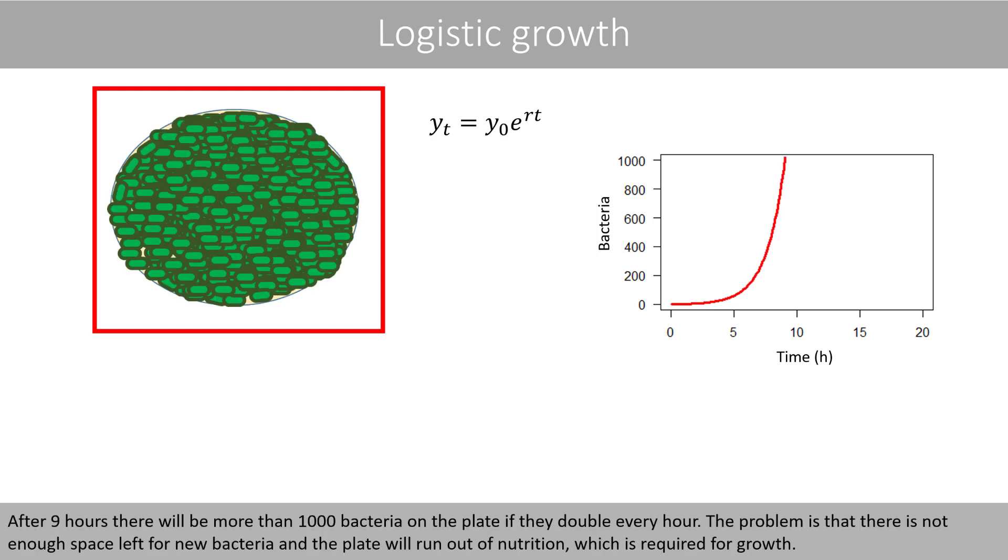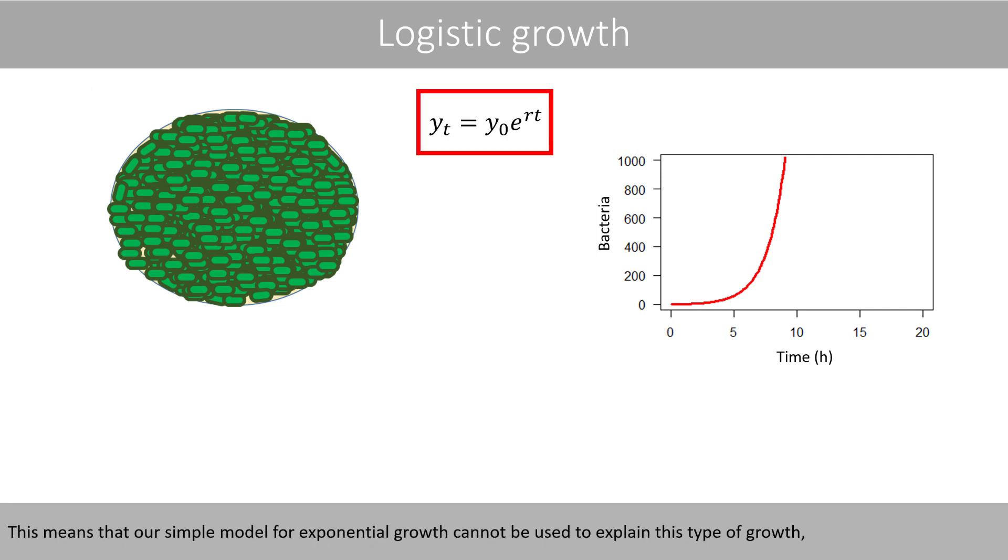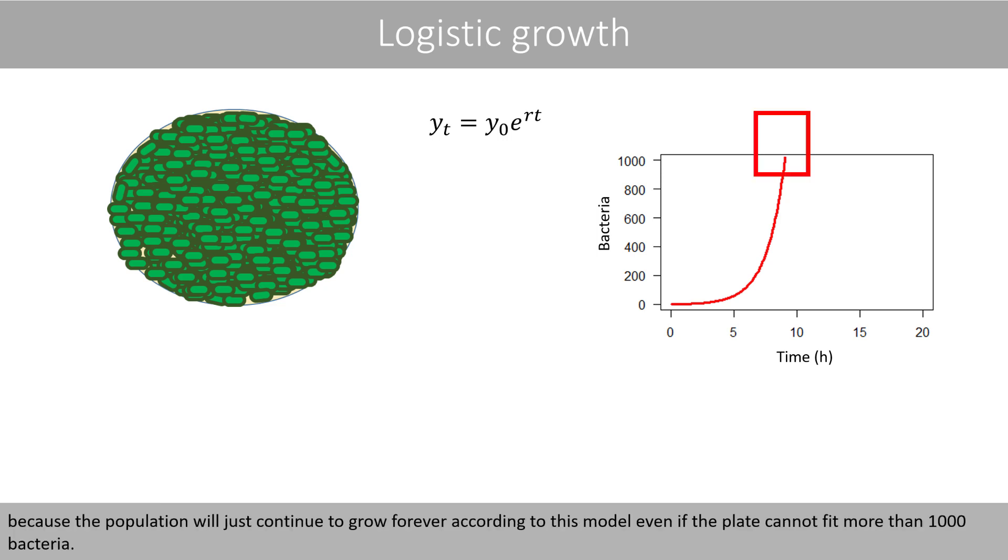After nine hours, there will be more than one thousand bacteria on the plate if they double every hour. The problem is that there is not enough space left for new bacteria, and the plate will run out of nutrition, which is required for growth. This means that our simple model for exponential growth cannot be used to explain this type of growth, because the population will just continue to grow forever according to this model, even if the plate cannot fit more than one thousand bacteria.